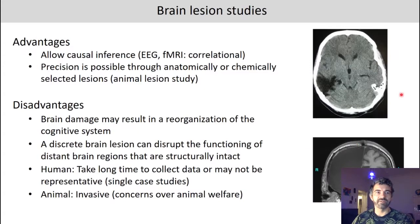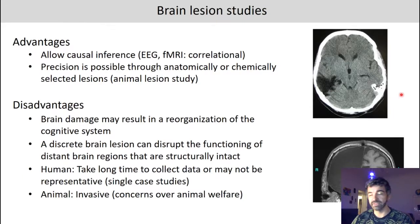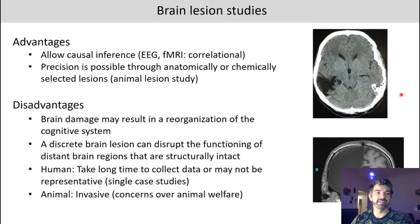What are the advantages and disadvantages of brain lesion studies? One advantage is that you can draw causal inferences, which is important because with EEG and fMRI you have more of a correlational measure — you cannot experimentally manipulate the signal, you only measure it and correlate it to behavior. Another advantage is that some precision is possible through anatomically or chemically selected lesions, allowing animal lesion studies to use methods that affect very specific, distinct areas of the brain.